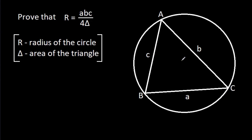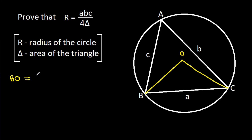Suppose the center of the circle is O. If we join BO and CO, then BO will be equal to CO — that will be the radius of the circle. Suppose R, so BO is R and CO is R.